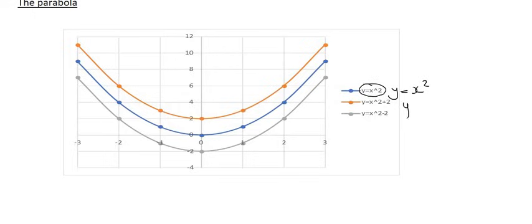They don't seem to have that feature available. So this blue graph is y equals x squared, the orangey red one is y equals x squared plus 2, and the gray graph is y equals x squared minus 2. So let's go and have a look at each of those.